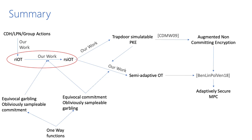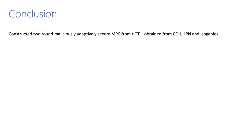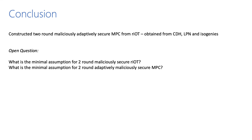Let me summarize. In this work we constructed two-round adaptively maliciously secure MPC from RIOT, and instantiated RIOT from CDH, LPN, and isogenies. To end with two open questions: what is the minimal assumption for two-round maliciously secure RIOT? Or more generally, what is the minimal assumption for a two-round adaptively maliciously secure MPC protocol? Thank you.